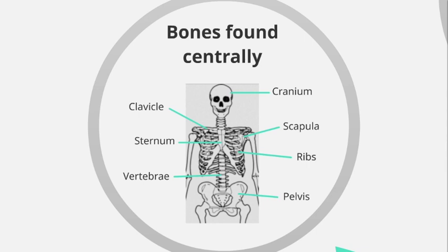Starting from the top, we have the cranium, which you may know as the skull. It's important that we use the correct anatomical name in the exam, so we say cranium. We then have the clavicle, sometimes referred to as the collar bone, located just in front of the shoulder at the front of the body. We then have the scapula, which you might refer to as your shoulder blade — the one that sticks out at the top of your back on both sides.